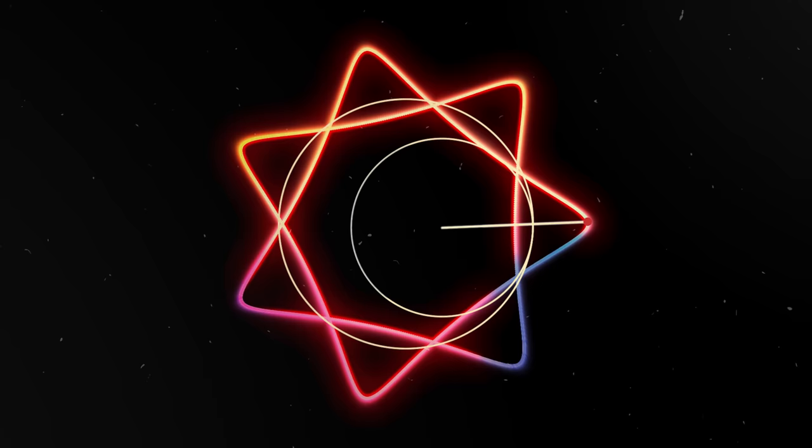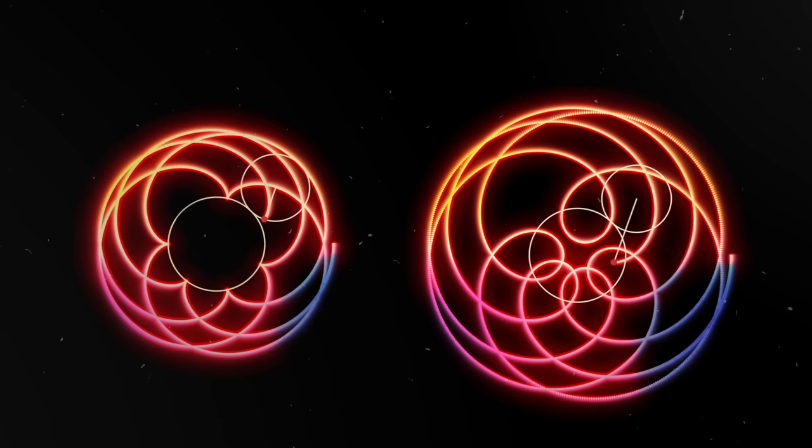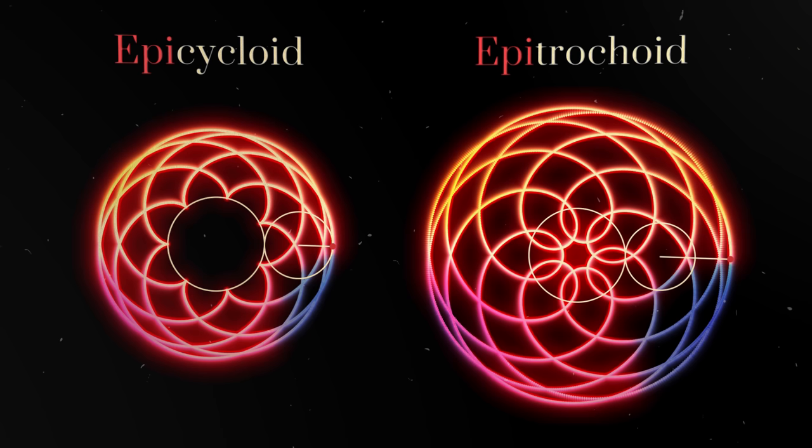Once you start doing impossible things, it's hard to stop. Why not position the wheel itself outside as well? The curves that the point draws on the surface of the outer wheel are called epicycloids, and at some distance from the center epitrochoids.